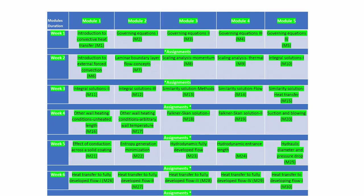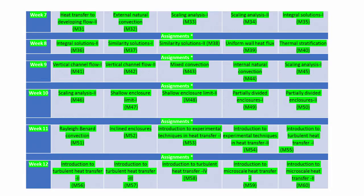We will look at constant heat flux boundary conditions, isothermal wall boundary conditions, and cases where a substance is heated in a patched-up manner. We will also look at suction and blowing. Then we will move to internal forced convection, covering hydrodynamically fully developed flows, entrance length effects, hydraulic diameter, pressure drops, heat transfer to fully developed flows, and what happens in the developing regime.